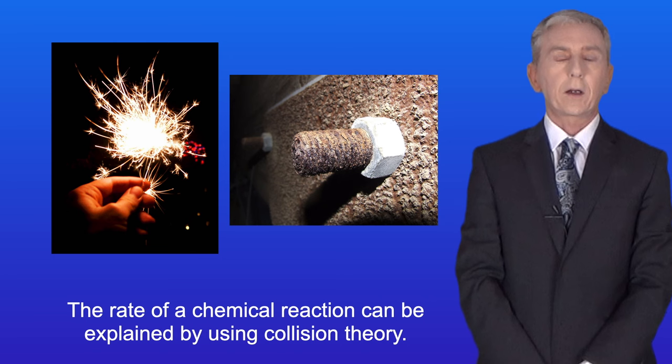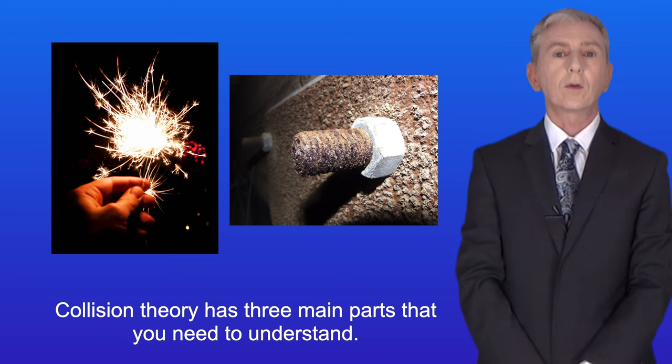Now the rate of a chemical reaction can be explained by using collision theory. And collision theory has three main parts that you need to understand.